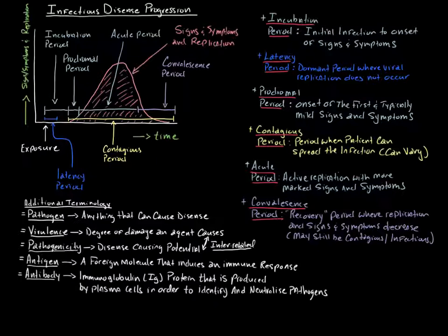So what we're talking about here is infectious disease progression. A lot of this is just terminology and understanding what some of these terms mean. If you look in the upper left-hand area here, I have a little graph. I've graphed signs and symptoms slash replication, organism replication, as a function of time on the x-axis. What I have here is some situation where somebody has been exposed to an agent, a disease-causing agent, a virus, or bacteria, fungus, what have you.